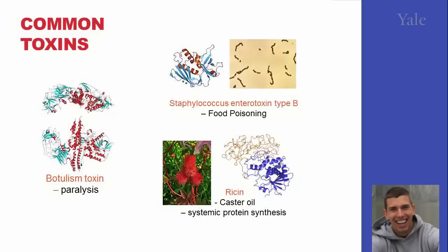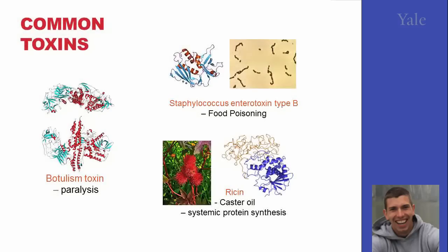Finally, ricin, which is isolated from castor oil, essentially acts by impeding protein synthesis throughout the body by interacting with the RNA translational machinery inside the cells, making them incapable of performing their normal function, thus disabling homeostasis.